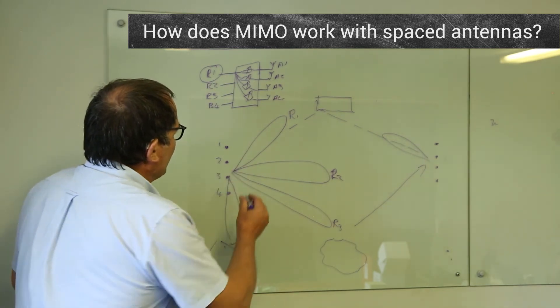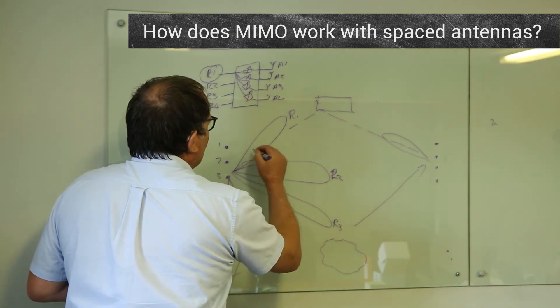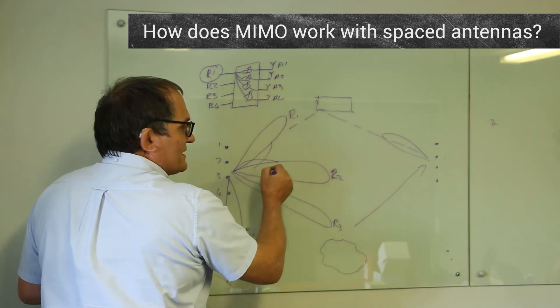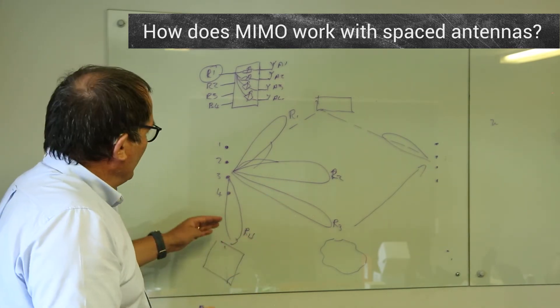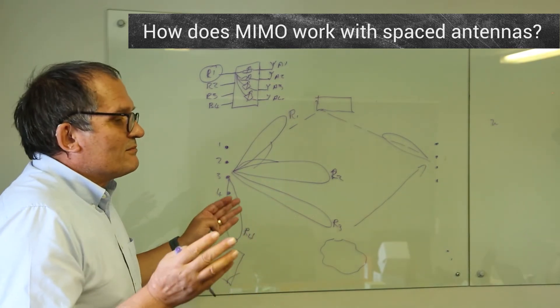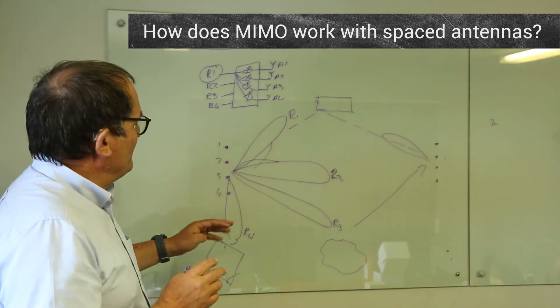So let's say it can create a beam in this direction. There's a building that will still reflect a beam here. So that could be radio 4. So in this situation, because there happen to be nice reflectors around, it can create four beams.